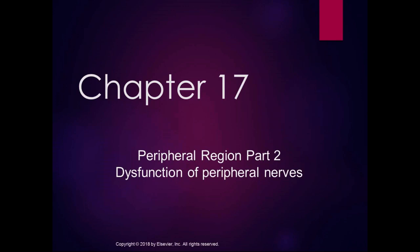Chapter 17 is relatively simple compared to some of the previous chapters, like the vertical tract material. We talked about peripheral nerves in the last section; now we're going to talk about dysfunction of the peripheral nerves.